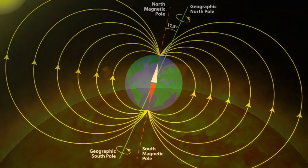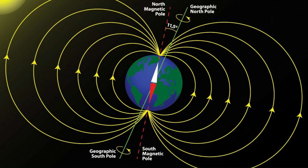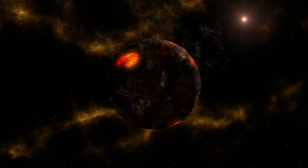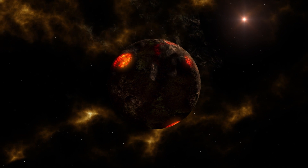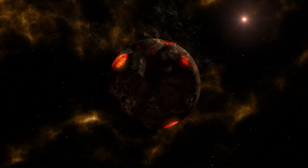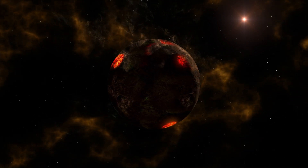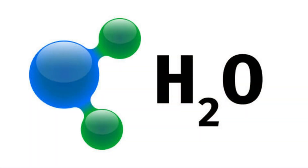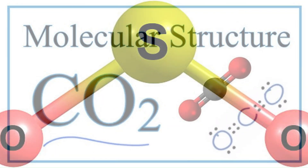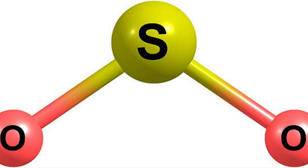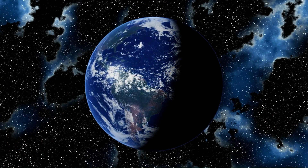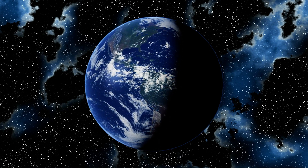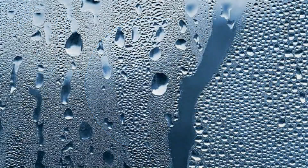About 4.4 billion years ago, as the Earth cooled, volcanic activity increased. Volcanic eruptions released water vapor (H₂O), carbon dioxide (CO₂), nitrogen (N₂), sulfur dioxide (SO₂), and other gases into the atmosphere. The composition of the atmosphere during this period was mainly CO₂, nitrogen, and water vapor, with very little free oxygen.